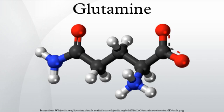Glutamine is one of the 20 amino acids encoded by the standard genetic code. It is considered a conditionally essential amino acid. Its side chain is an amide formed by replacing the side chain hydroxyl of glutamic acid with an amine functional group, making it the amide of glutamic acid. Its codons are CAA and CAG. In human blood, glutamine is the most abundant free amino acid, with a concentration of about 500–900 micromoles per liter.